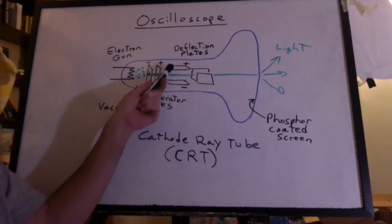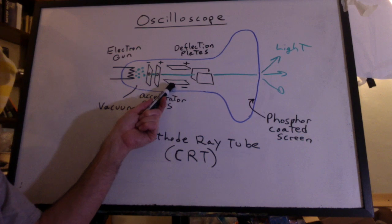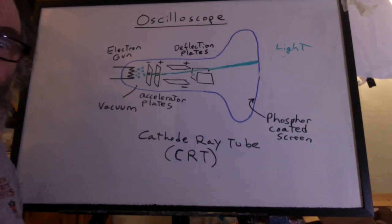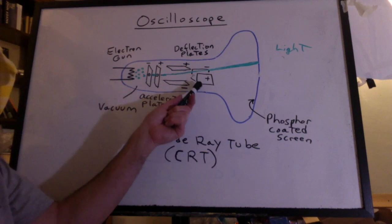Now if we make the top deflection plate positive and the bottom one negative, the beam curves up. And the same idea happens with the horizontal deflection plates.